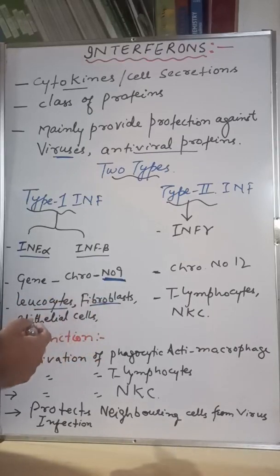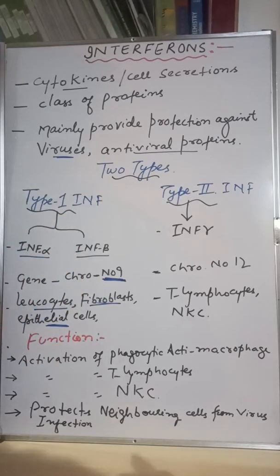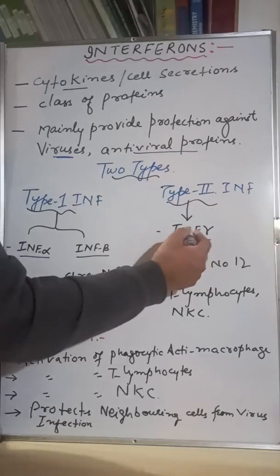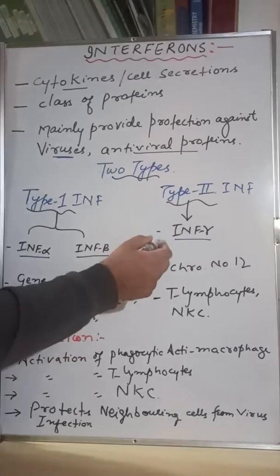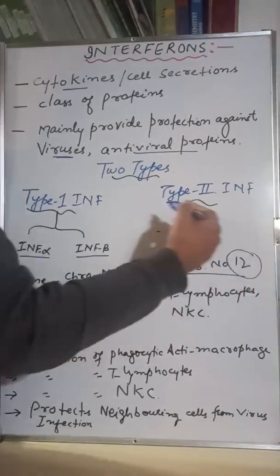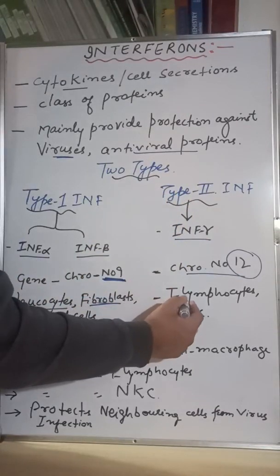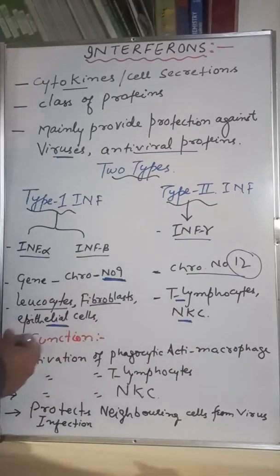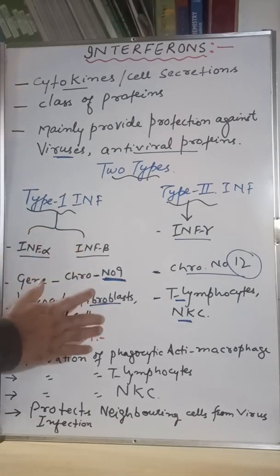The cells which secrete Type 1 interferon mainly include leukocytes (WBCs), fibroblasts, and epithelial cells. Type 2 interferon consists of interferon gamma (INF-gamma). The gene responsible for its control is present on chromosome number 12 — another very important point. Special cells secrete INF-gamma, including T lymphocytes and natural killer cells.